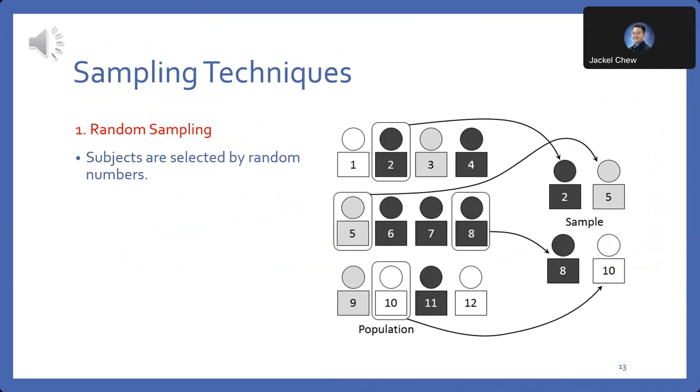Now, we delve into the crucial topic of sampling techniques, essential for accurate statistical analysis and interpretation. Let's explore four common techniques. Random sampling: subjects are selected using random numbers, ensuring every member of the population has an equal chance of being chosen. This minimizes bias and provides a representative sample.